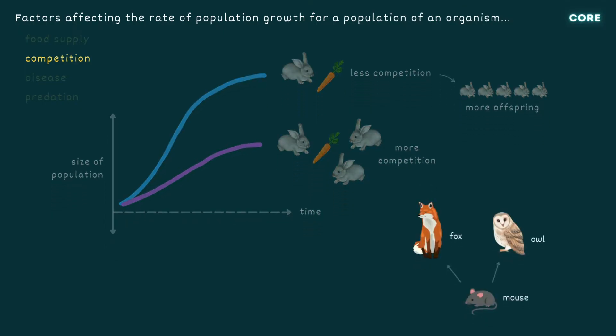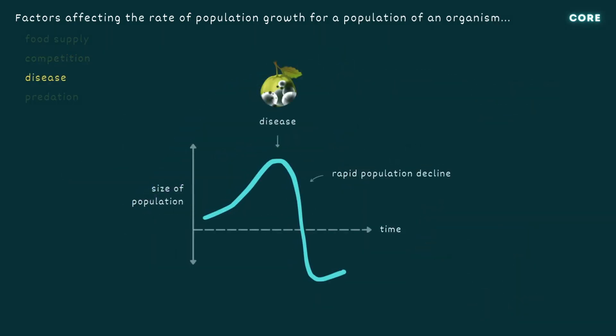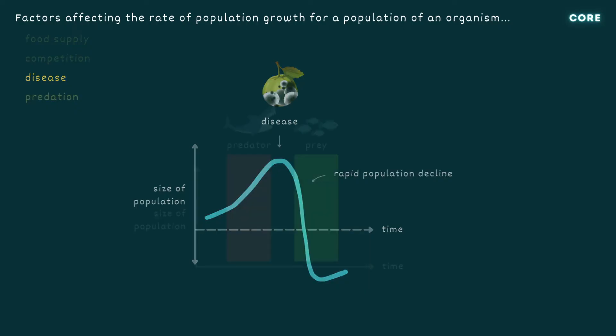For example, excessive competition between owls and foxes for a common food source like mice means that neither population has enough food to expand. Diseases that spread easily from one individual to another can reduce population sizes dramatically — for example, malaria reportedly kills hundreds of thousands of people each year, and fungal diseases infect entire populations of fruit trees.